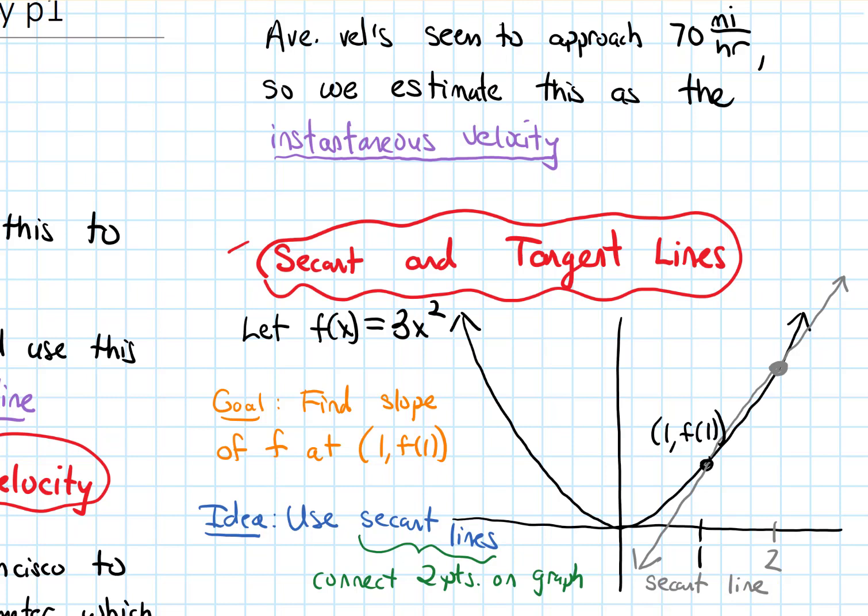So of course this secant line isn't exactly as steep as the actual curve at the point I'm interested in, 1, f of 1. Like the actual curve looks to be a little bit flatter than this secant line is. So to make this estimate a little bit better, I could move that point when x is 2 a little bit closer. Like maybe I move it to 1.8 or something like that, a little bit closer.